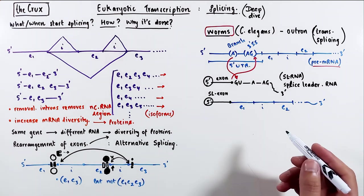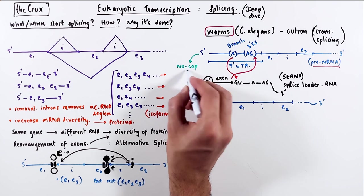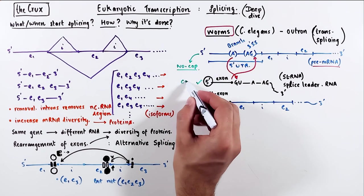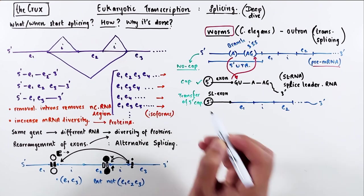So why do worms do this? One use could be the transfer of the cap. Say for some reason, the pre-mRNA didn't have the 5' cap, which would reduce the stability of the RNA. The slRNA has the 5' cap.